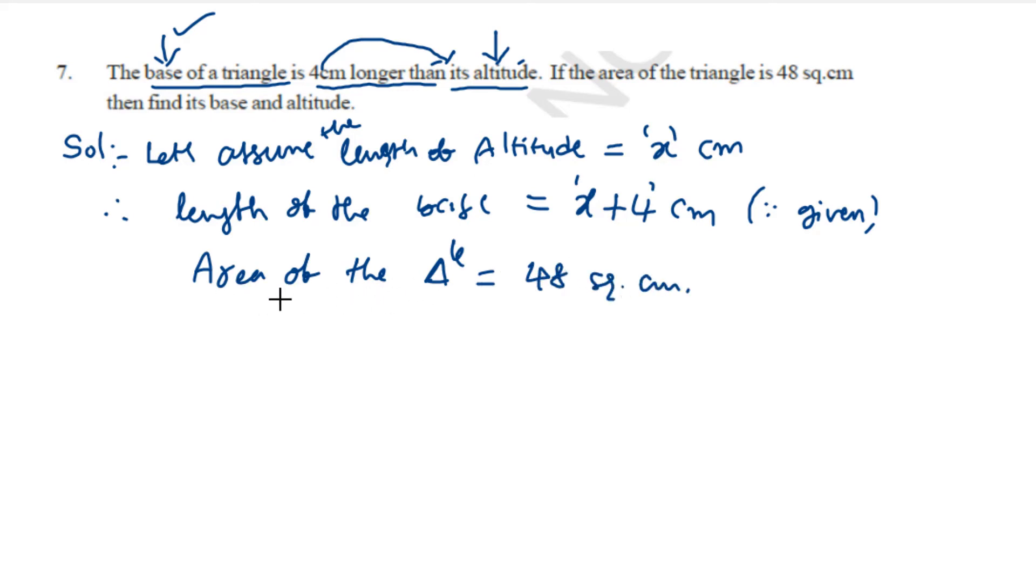So what is the formula for area of the triangle when we know base and altitude? Very good. It is half into base into altitude or height. Altitude is nothing but height.